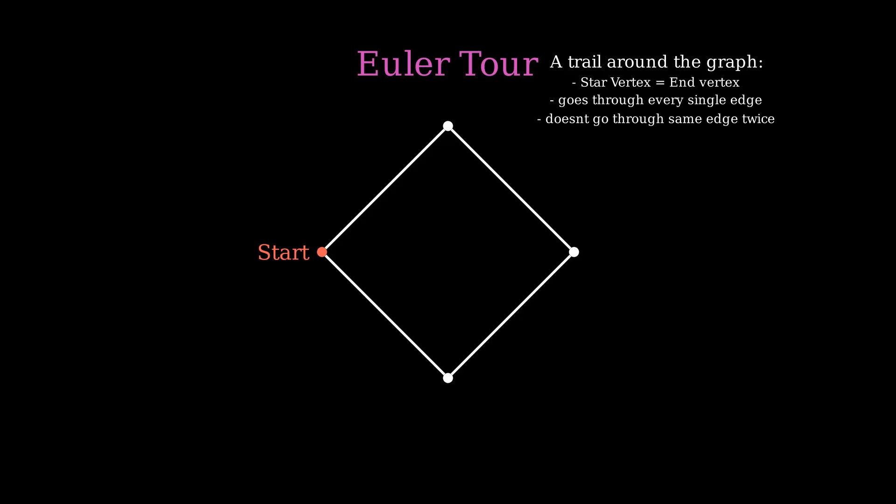Euler Tour, what is it? It's a trail around the graph in which you end back at the start position after going through every edge. But you're not allowed to go through the same edge twice. Let's take this square as an example here. The Euler Tour of this square looks like this. As you can see, we're back at the start. We went through every edge without repeating an edge two times.